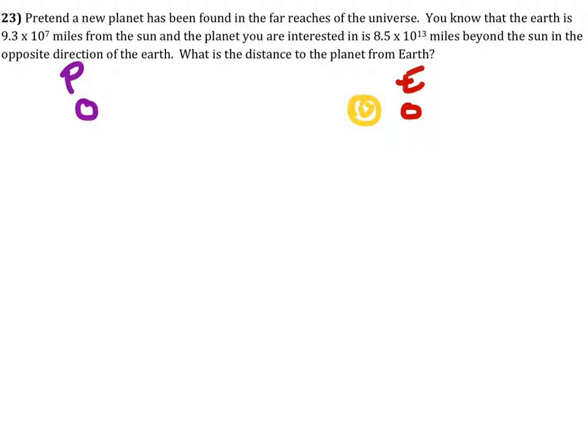How far apart are they? What is the distance from the planet to the Earth? Well, the distance from the planet to the Sun is 8.5 times 10 to the power of 13, and the distance from the Earth to the Sun is 9.3 times 10 to the power of 7. And so, all we're going to do is add these two distances together to see how far they are apart.